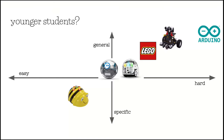Something like the Sphero might be in that Garden of Eden spot — just a little bit — where you can pick it up and start dragging around the blocks, but students still get to explore and learn a bit about programming concepts.